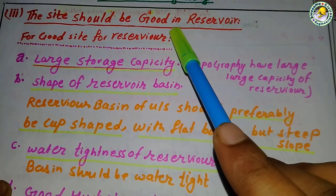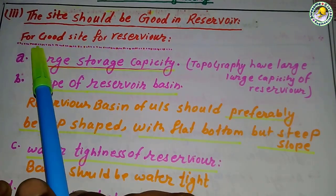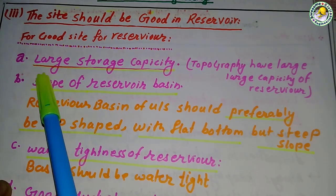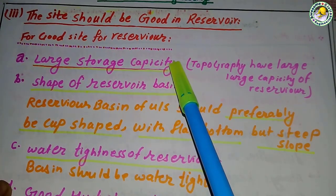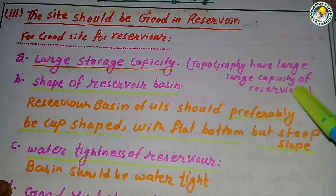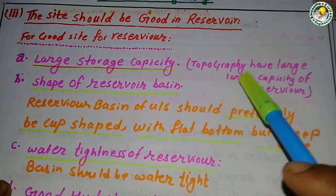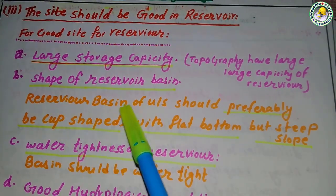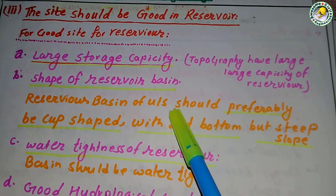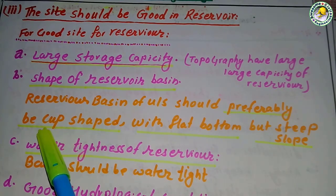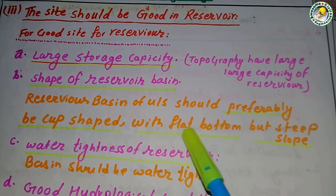Number three — the dam site should be selected such that it provides a good reservoir site. For a good reservoir, there should be a large storage capacity. The topography should allow a large capacity reservoir, and the shape of the reservoir basin on the upstream should preferably be cup-shaped with a flat bottom.